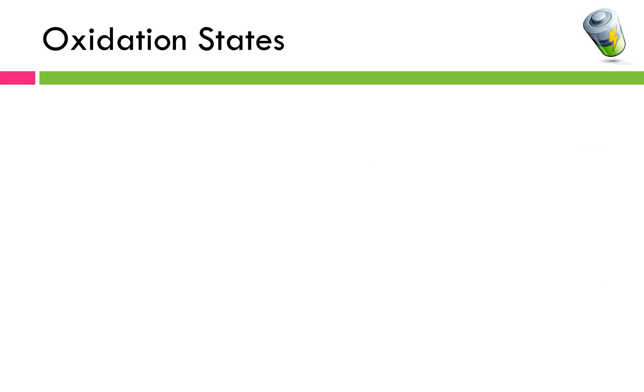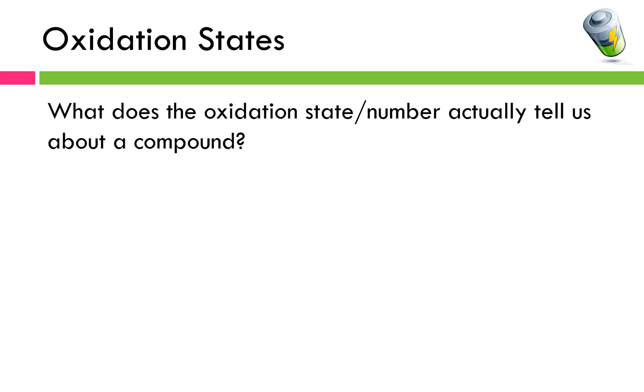So today we're going to talk about oxidation states and as we move forward we're going to relate them to oxidation and reduction reactions. You might be wondering what does the oxidation state or oxidation number, again they're really going to be used as the same term, actually tell us about a compound. And it depends on if the compound we're looking at is ionic or covalent in nature.